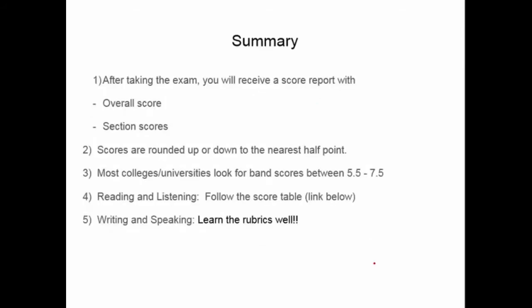To summarize: after taking your exam, you will receive a score report with your overall score and your section scores. The overall score is your average score for the entire test, and scores are rounded up or down to the nearest half point. Most colleges and universities are looking for band scores somewhere around 5.5 to 7.5, but you need to check with your institution to see what they require.